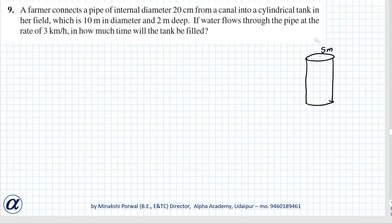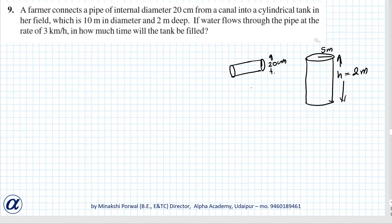So basically there is a cylindrical tank. The dimensions of this tank are: diameter is 10 meters, that means radius is 5 meters, and depth (height) is 2 meters. Now, a pipe is connected from the canal. The internal diameter of the pipe is 20 centimeters, and the rate of water flowing is 3 kilometers per hour.